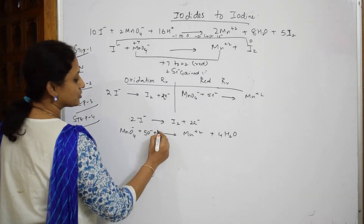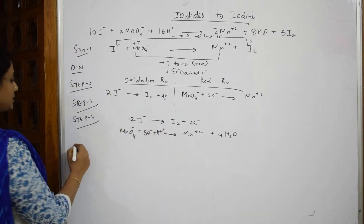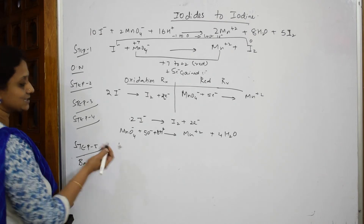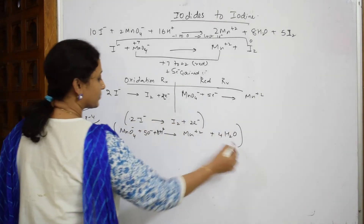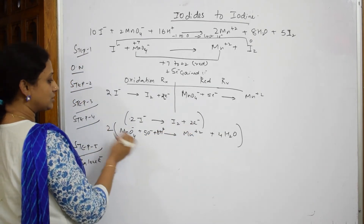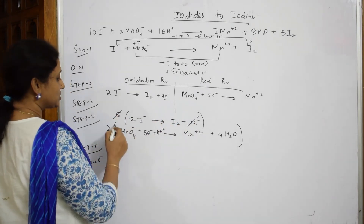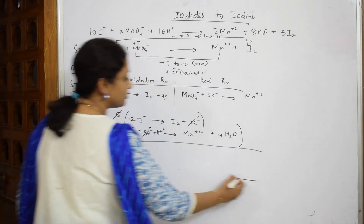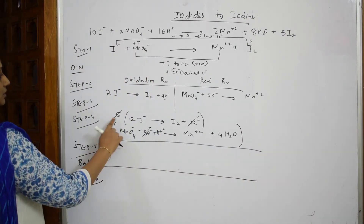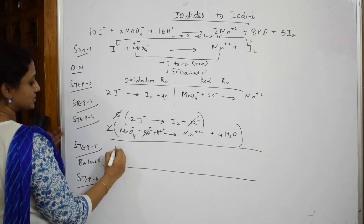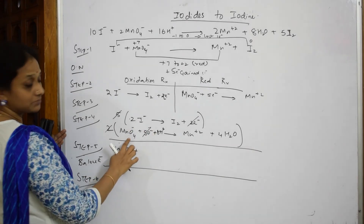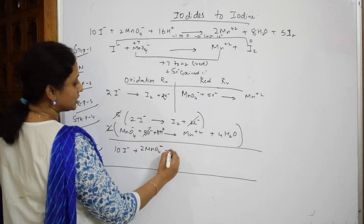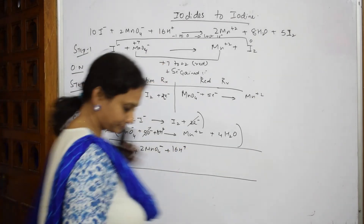In Step 5, balance and cancel the electrons. The reduction half-reaction has 5 electrons and the oxidation half-reaction has 2 electrons. Cross-multiply: multiply the oxidation half-reaction by 5 and the reduction half-reaction by 2, so the electrons cancel. This gives 10 I⁻ on the reactant side and, after multiplying, 16 H⁺ protons.